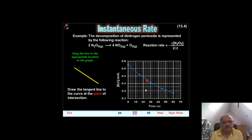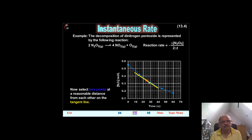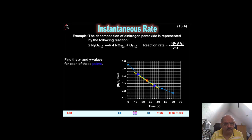Draw the tangent line to the curve at the point of intersection. Drag the tangent line and drop it to the point of intersection. Now select two points at a reasonable distance from each other on the tangent line. Find the x and y values for each of these points. The difference in x values, that is x2 minus x1 equals. So this is what we have done. Taken a student step by step interactively.